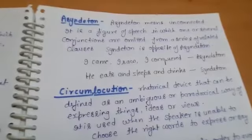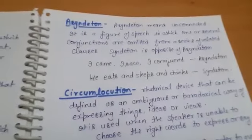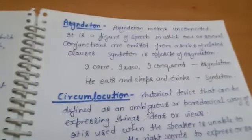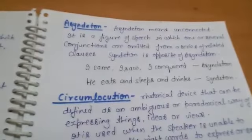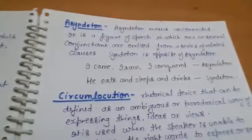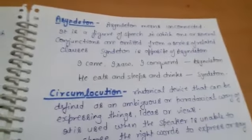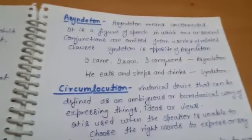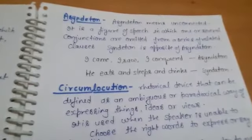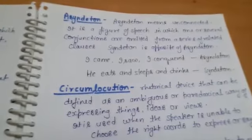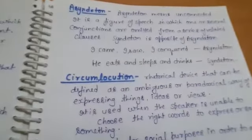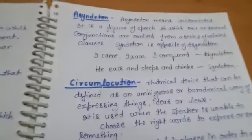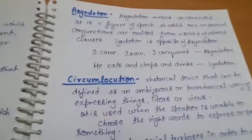Now the next: asyndeton and syndeton — there are two opposites together. Asyndeton means unconnected. It is a figure of speech in which one or several conjunctions are omitted from a series of related clauses. Syndeton is the opposite of asyndeton — in syndeton, conjunctions are used and applied, but in asyndeton there is omission of conjunctions.